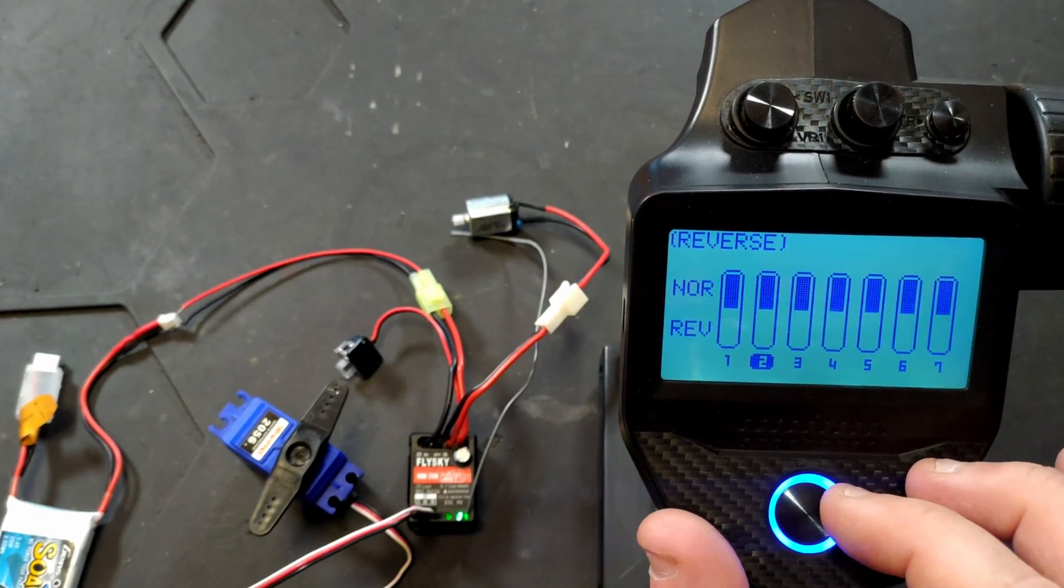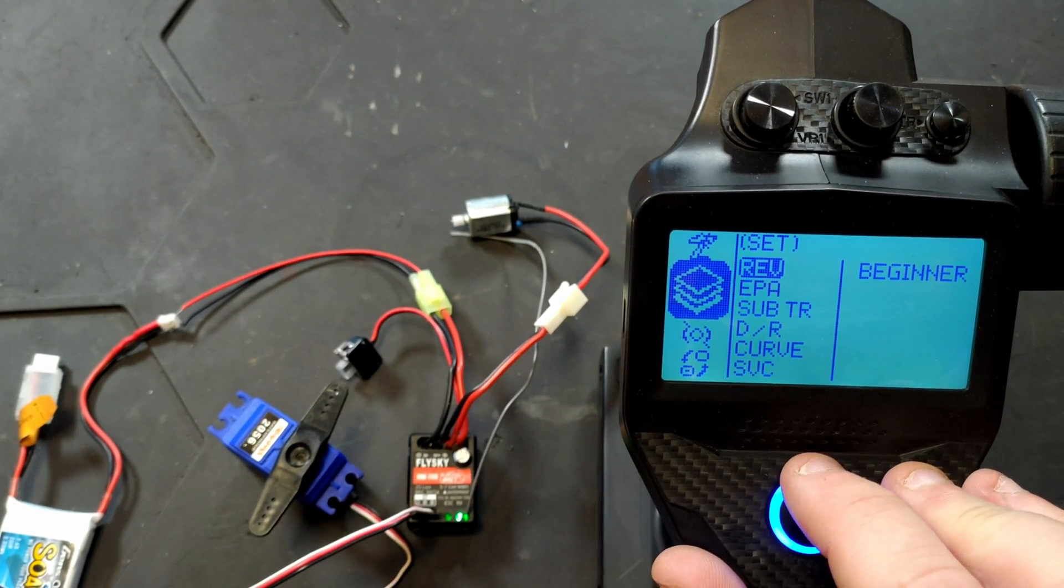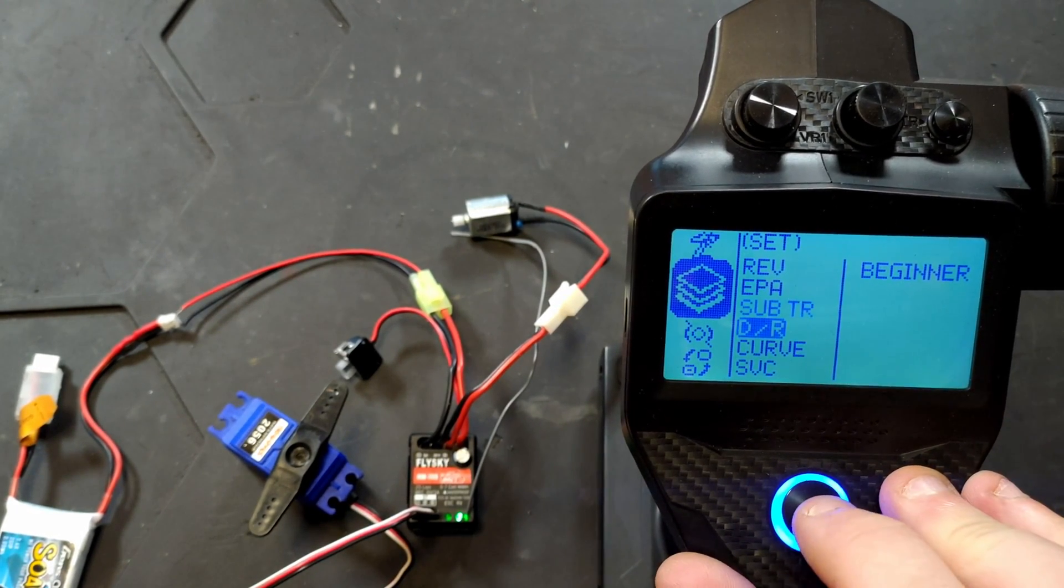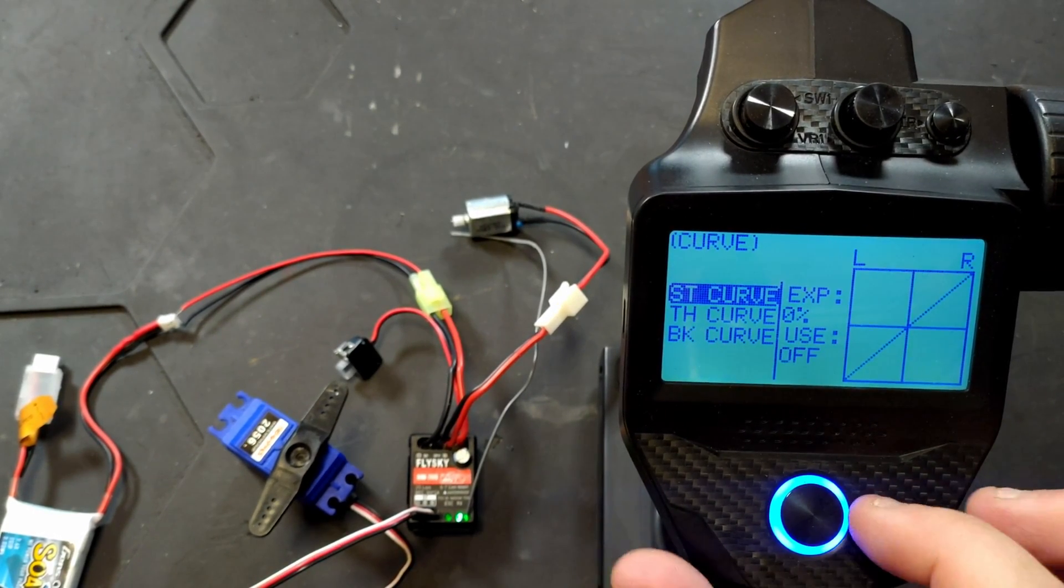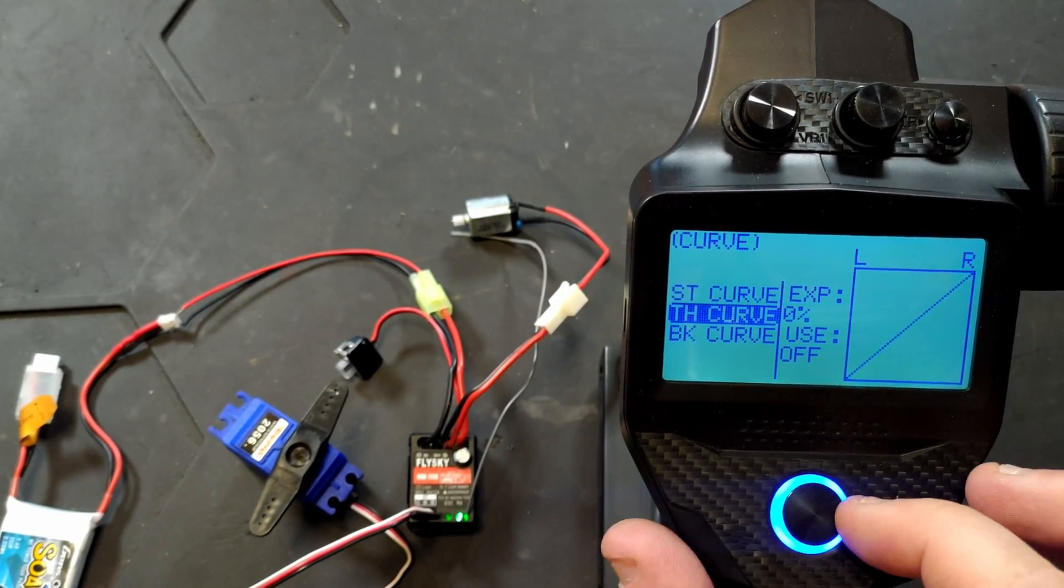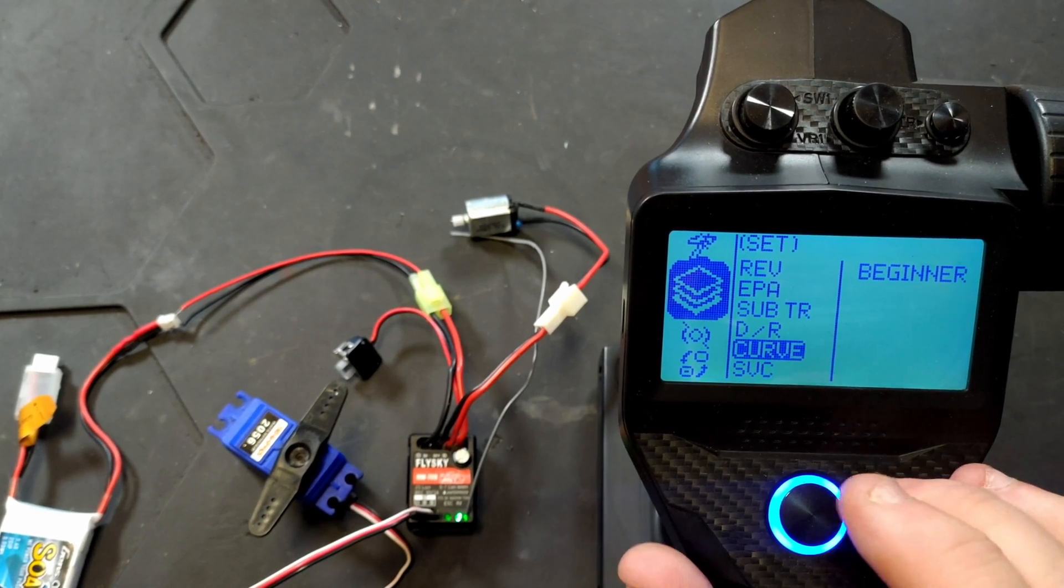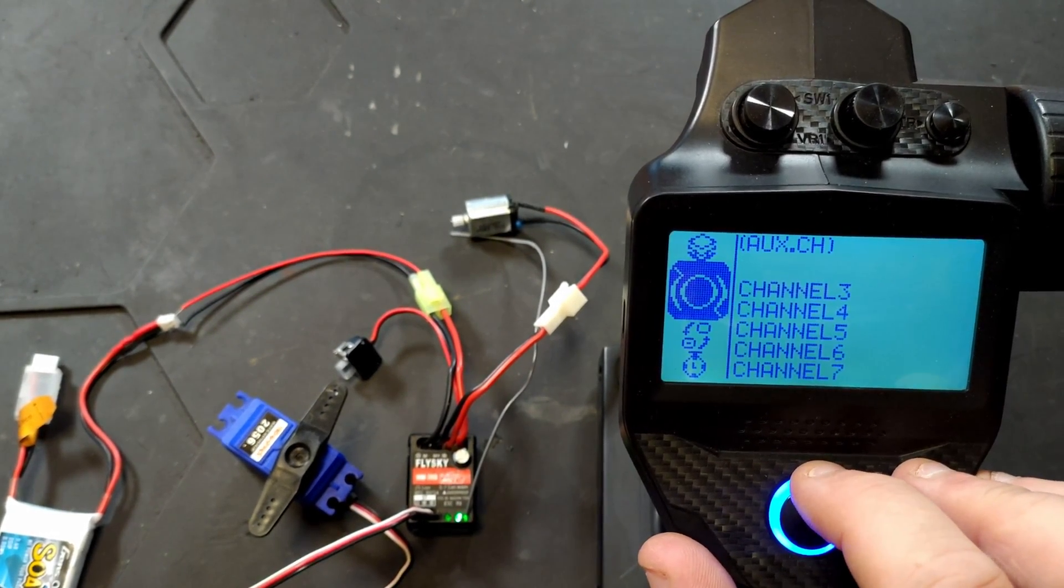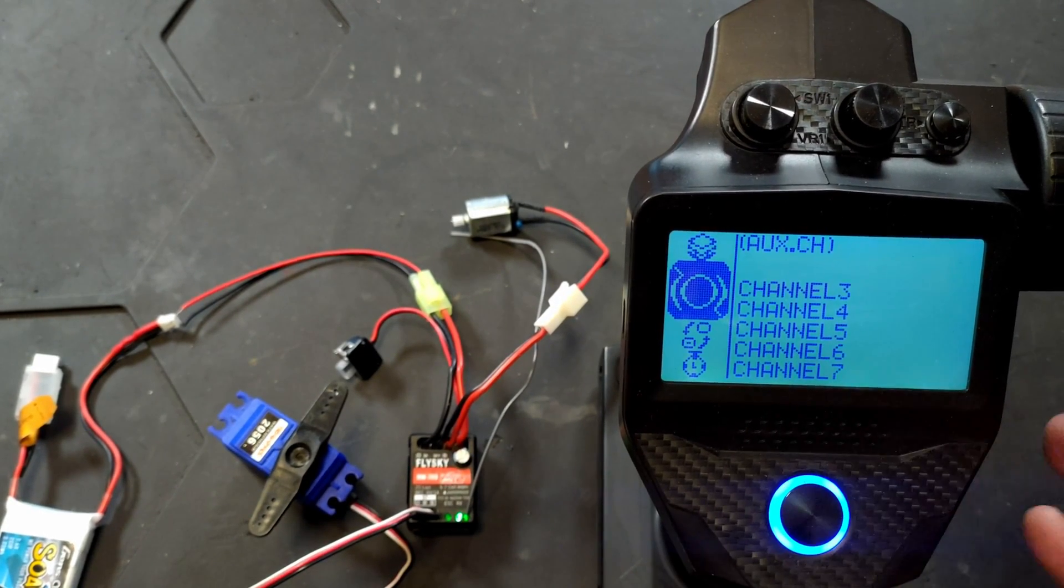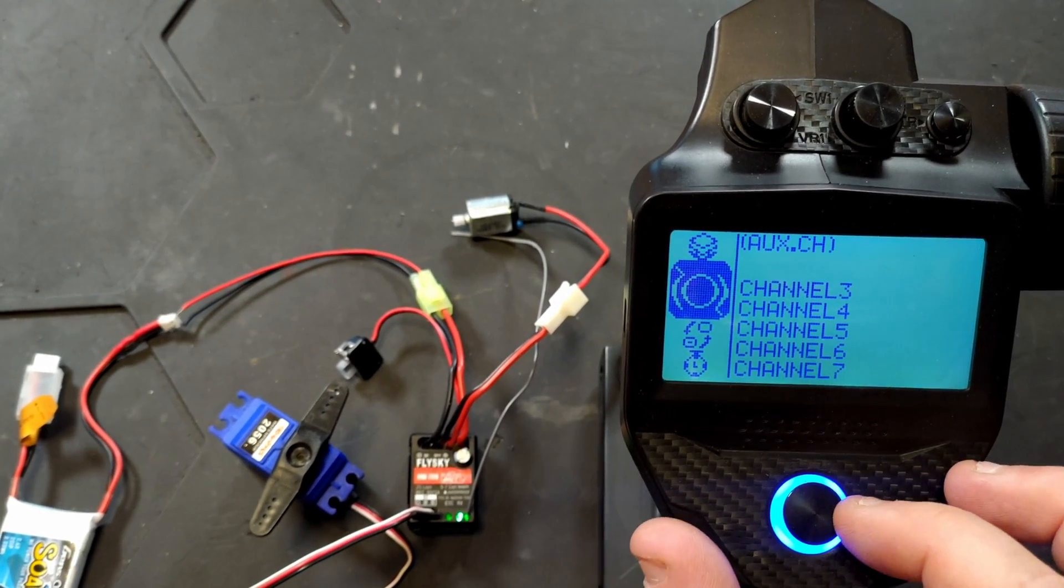Thought it would, but I thought I'd check that first. You've also got your sub trims, your dual rates that you can use, throttle curve which could be useful on a crawler depending on what KV motor you're running. Your auxiliary channels, no point setting any of them because you've only got two channels on this.